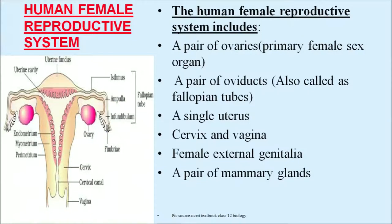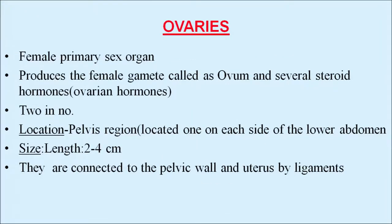The human female reproductive system includes a pair of ovaries — the primary female sex organs — a pair of oviducts also called fallopian tubes, a single uterus, cervix, vagina, female external genitalia, and a pair of mammary glands. Ovaries produce the female gamete called ovum and several steroid hormones called ovarian hormones. Ovaries are two in number, located in the pelvic region, one on each side of the lower abdomen, with a length of 2 to 4 centimeters.